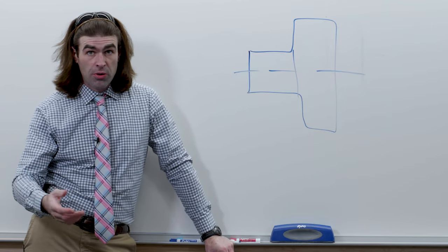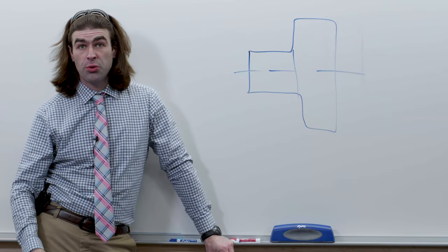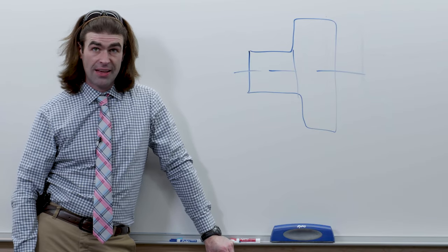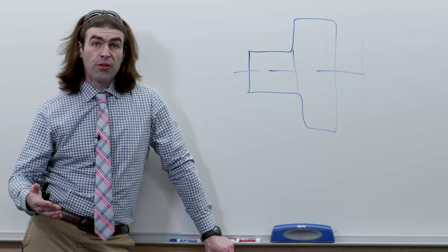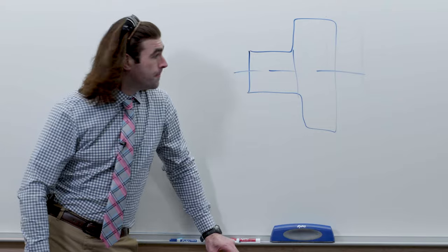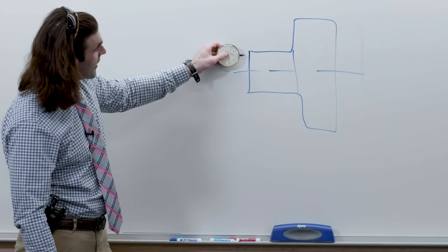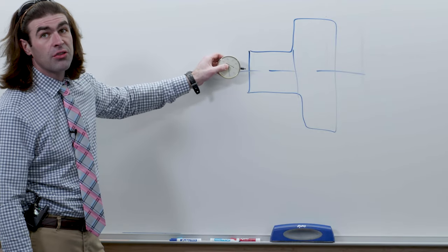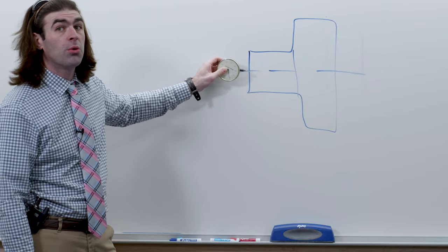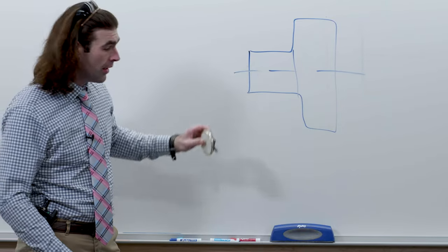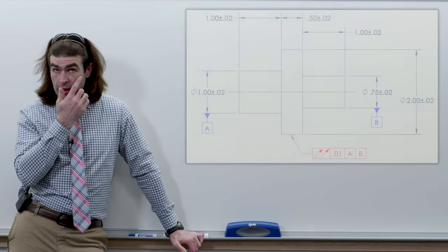So it's a much more difficult tolerance to inspect and potentially to make. What it does for a flat surface perpendicular to the datum axis, say we're checking this flat surface, it controls the flatness and perpendicularity to the datum axis. Next up, I'll put the image on the board here.